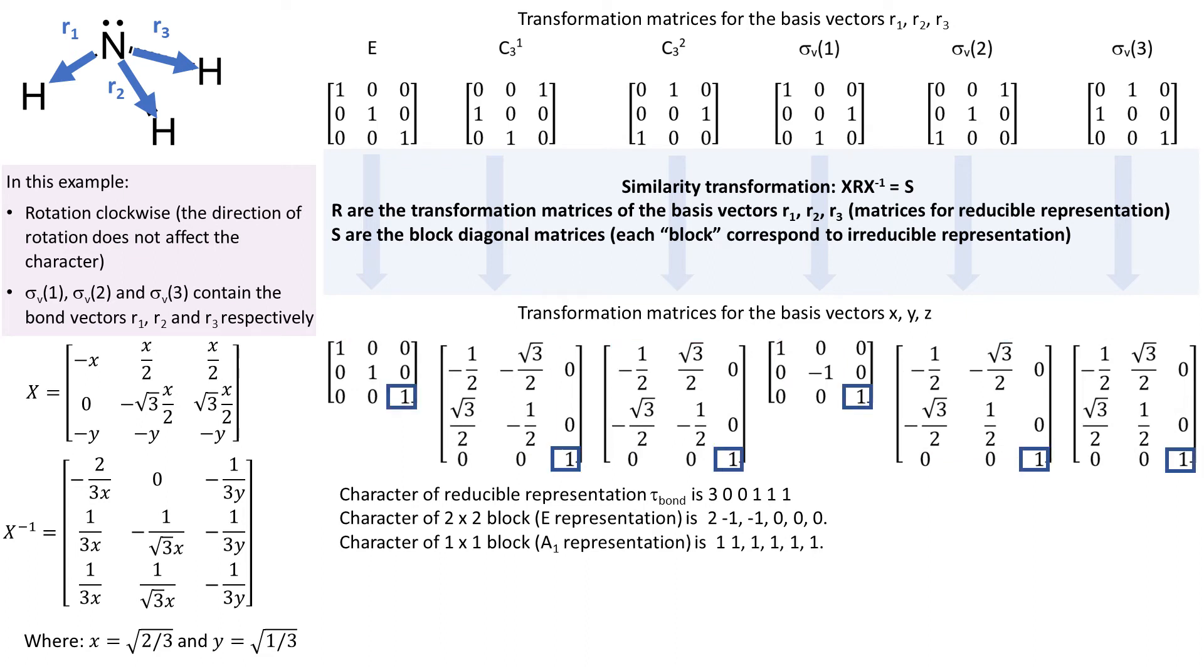Then we have 1x1 block that corresponds to a1, the totally symmetric representation, which means each entry is 1. When we add E and a1 component-wise, we see that we get the character for the reducible representation.